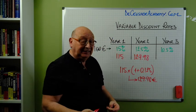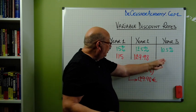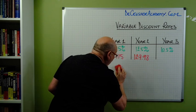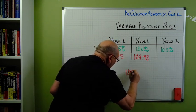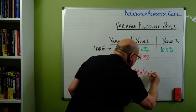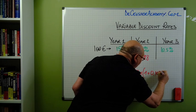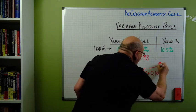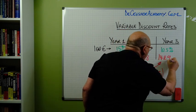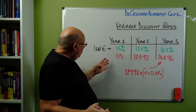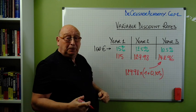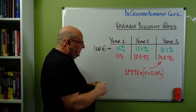We apply the same principle for the last number. So now we multiply 129.98 with 1 plus 0.105, which gives us the last value of 142.96. We can see the future values of the 100 euro over these three periods. Basically it's the same principle, but we do the calculation using those different discount rates.